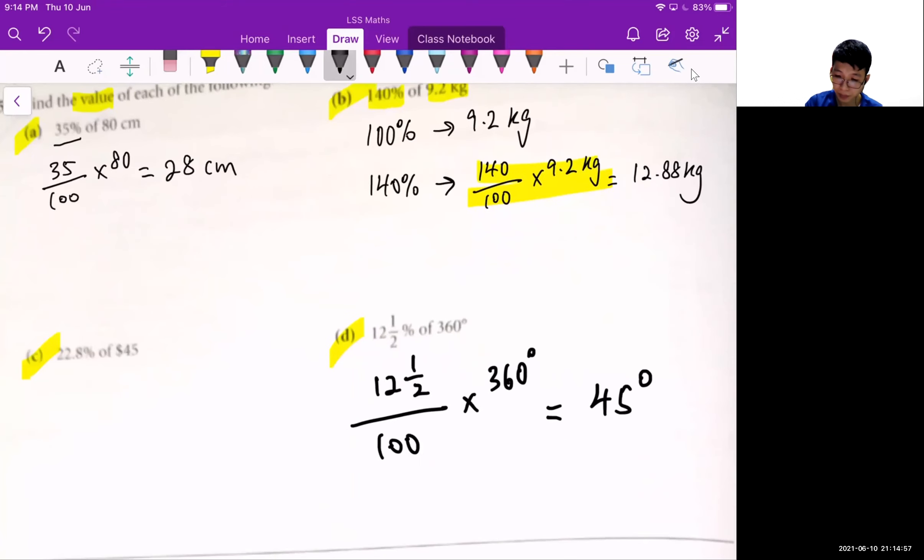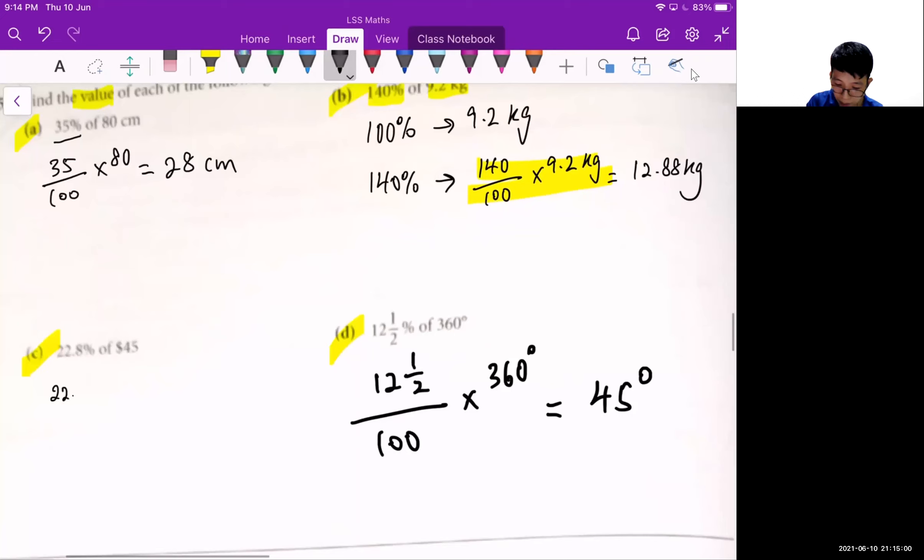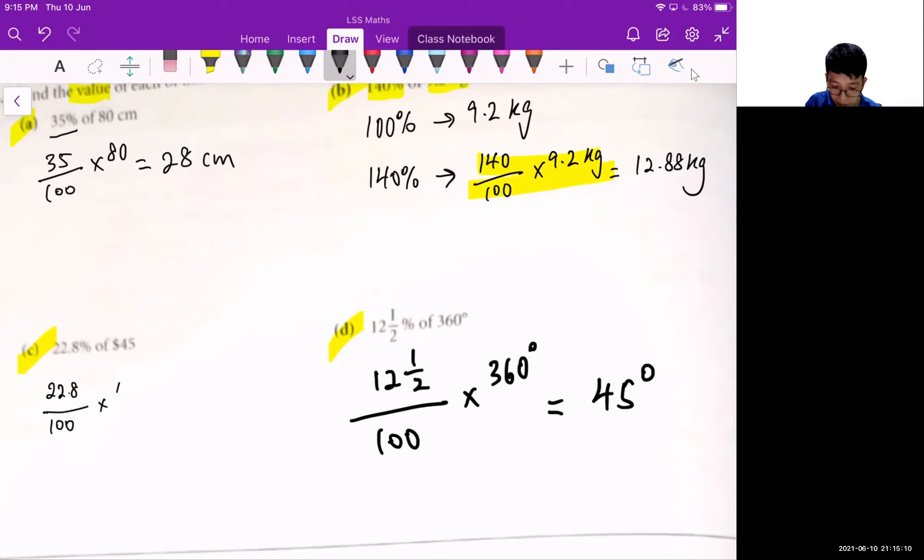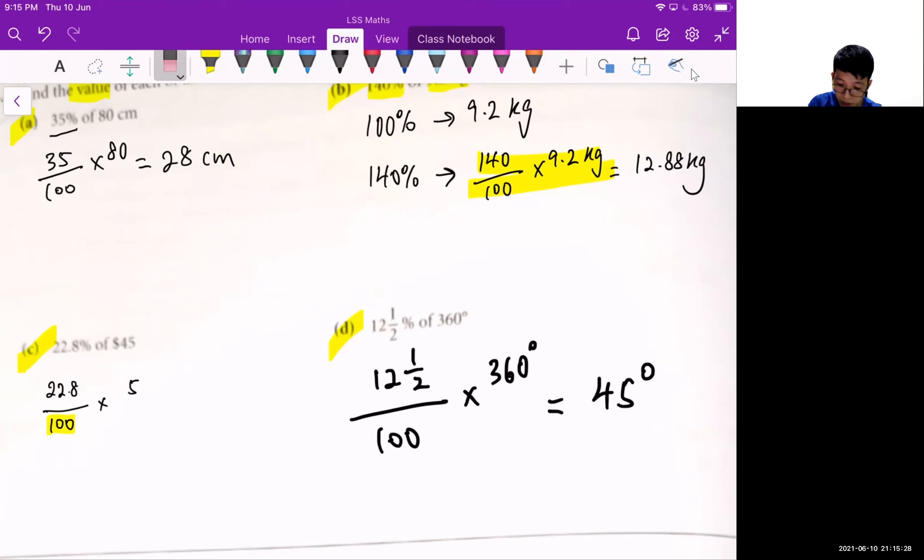Okay, so let's look at the next one. Now I need to find out 22.8% of $45. So I express 22.8 as a fraction and multiply by 45. You must be wondering how come I choose 100 as a base. Because I know that $45 represents 100%. So that's why I express it over 100%. In this case, it will be 22.8 divided by 100 times 45, which is $10.26.